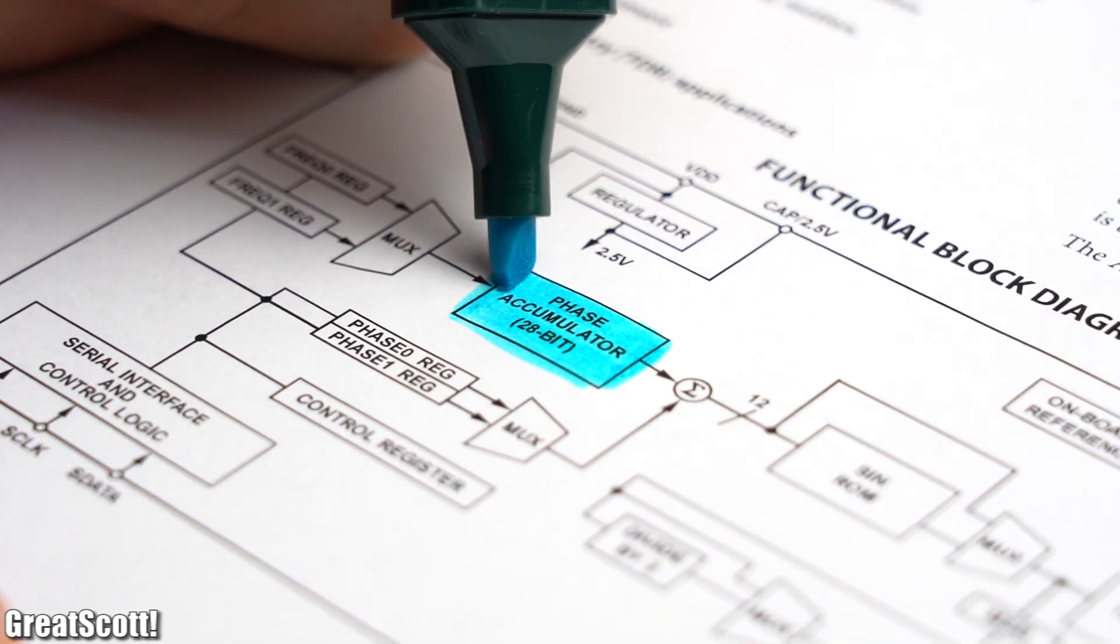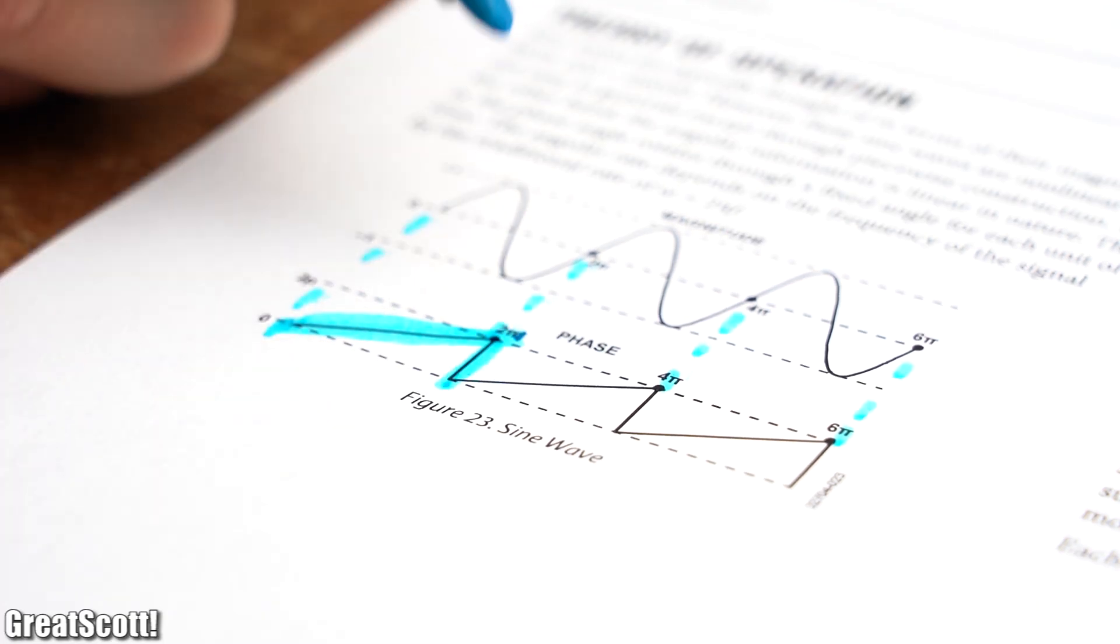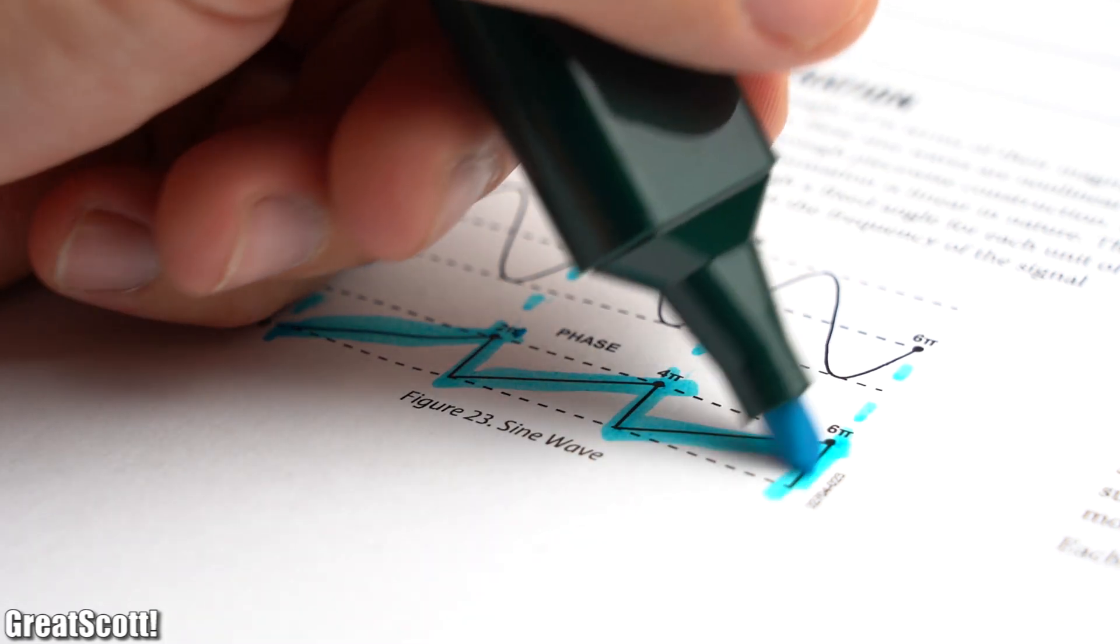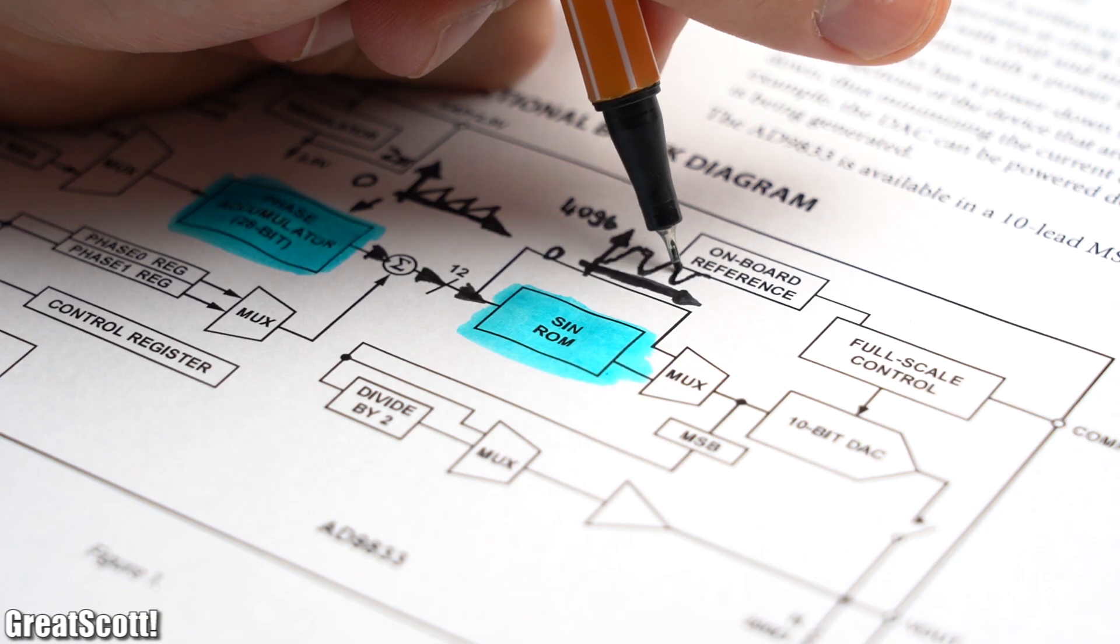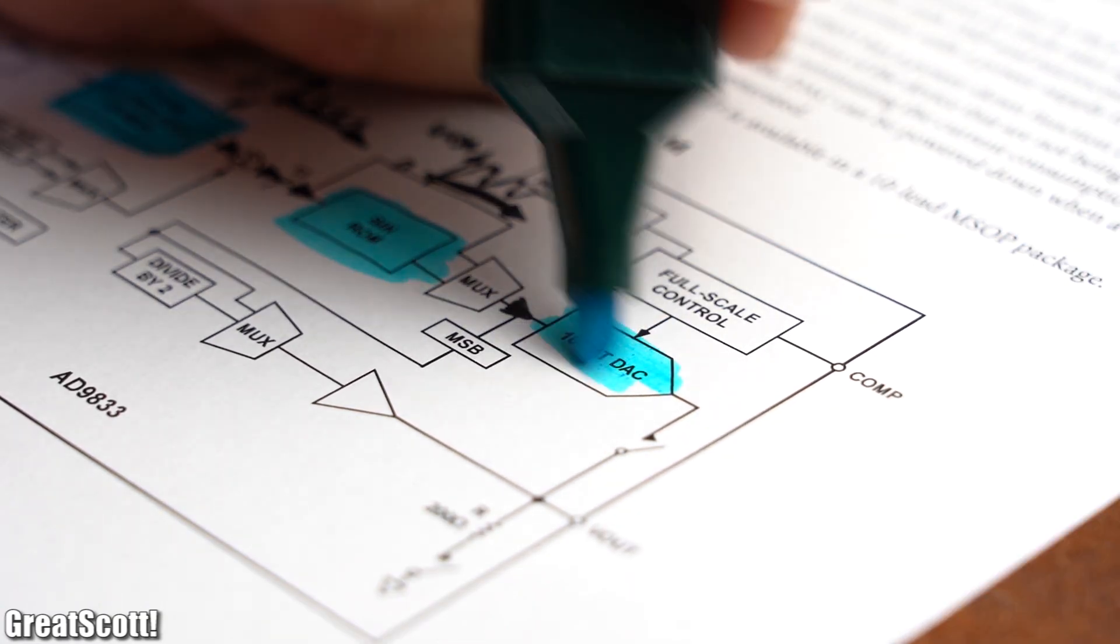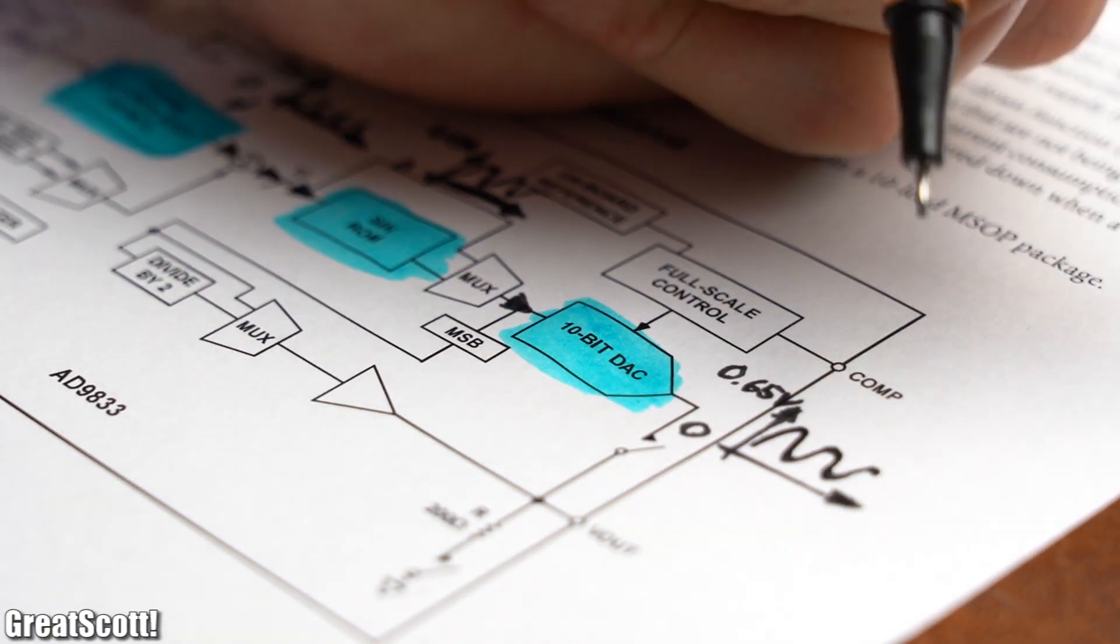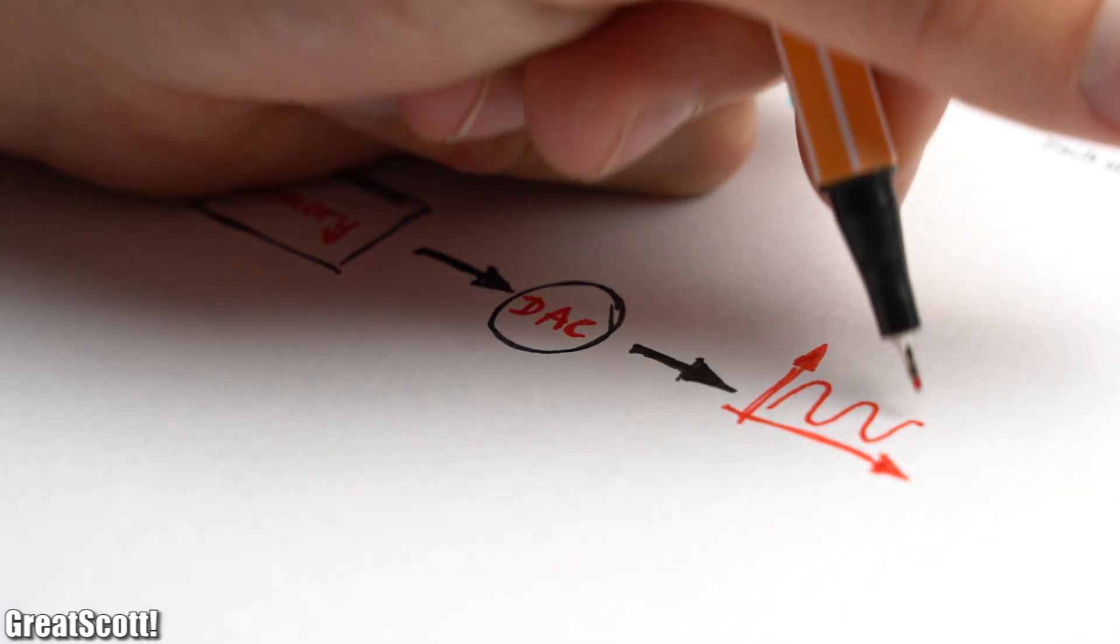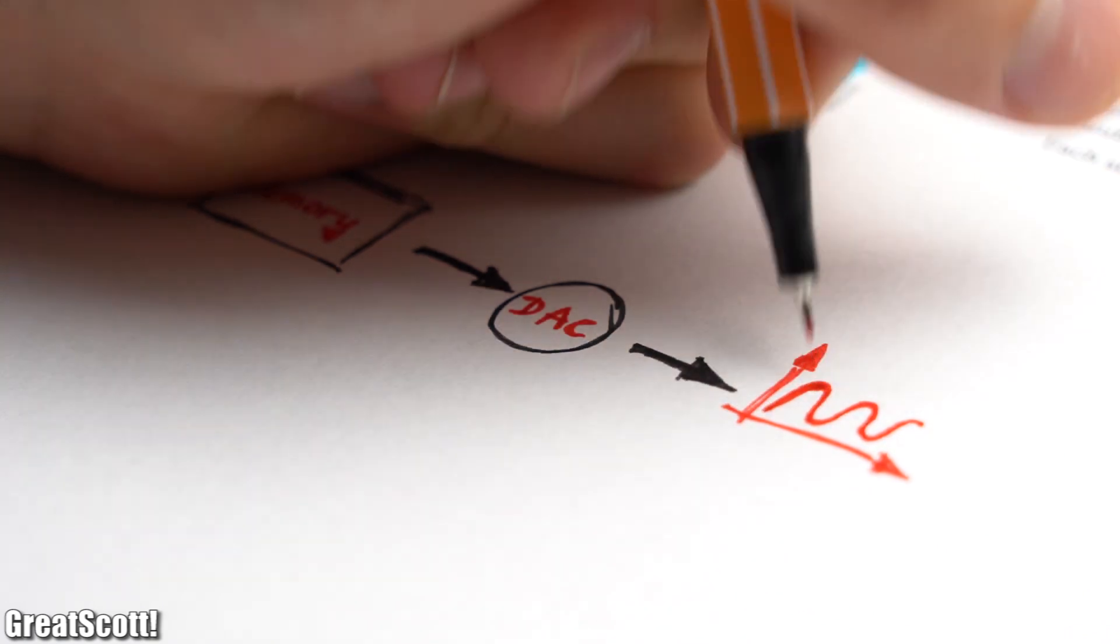First off we got the phase accumulator, which super simplified stores all the possible voltage values of a sine wave as phase information between 0 and 2 pi. Next the sin ROM turns the phase information into actual mathematical voltage amplitudes. And finally we got a digital to analog converter, which then spits out our beautiful sine wave. So in a nutshell it is a more or less glorified memory with attached DAC, to generate whatever waveform is stored in the memory.